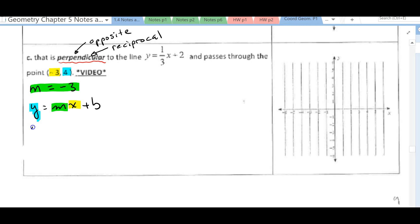So I have 4 is equal to negative 3 times negative 3. So just coincidence that the x value they give us and the slope are both negative 3. So I have 4 is equal to 9 plus b. I'll subtract 9 from both sides, and I get that my y-intercept is negative 5.